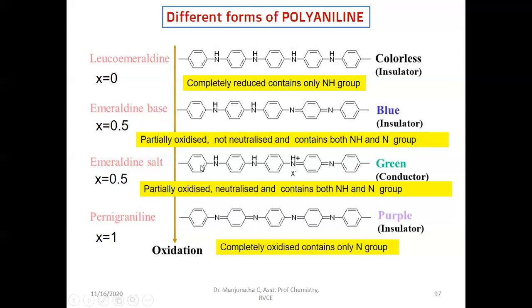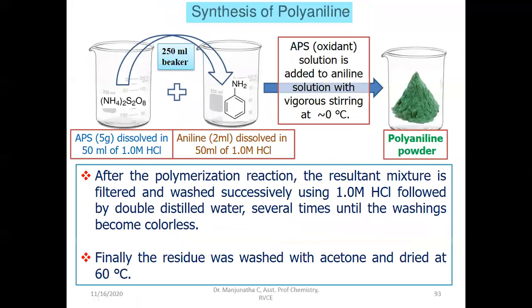So these are the four different forms of polyaniline. One is completely reduced (only NH groups), one is partially oxidized but not neutralized, one is completely oxidized (only N groups), and Emeraldine salt has both N and NH groups and is neutralized with acid. It is green color. So if you are getting a green color product, that means Emeraldine salt is formed — that is the conducting polyaniline.